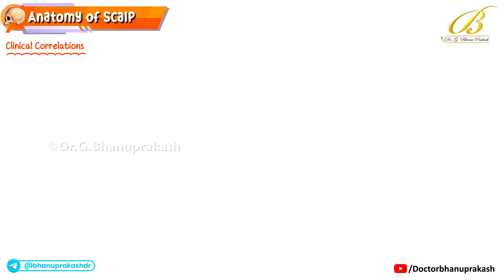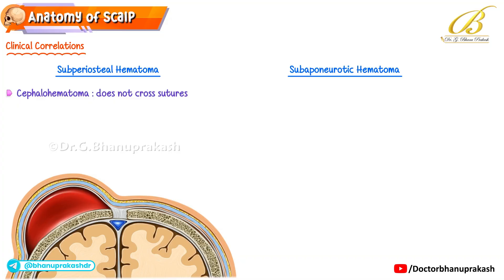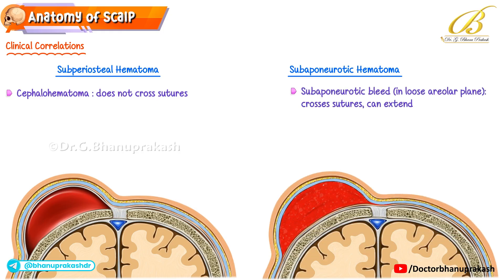Let's differentiate two important types of hematomas. A subperiosteal hematoma, also called a cephalohematoma, lies deep to the pericranium. Because the pericranium is firmly attached at sutures, these collections never cross suture lines. In contrast, a sub-aponeurotic bleed occurs in the loose areolar layer — since this plane is unrestricted, blood can cross sutures and spread widely across the scalp. This distinction is especially important in newborns and trauma cases.